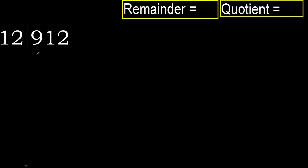912 divided by 12. 9 is less, therefore next. 91 is not less, therefore with 91: 12 multiplied by which number is nearest to 91, but not greater?